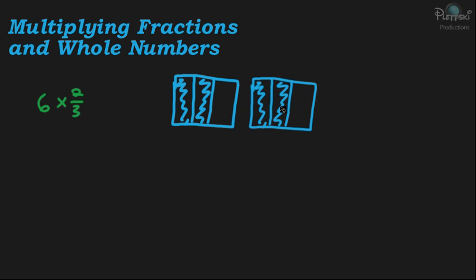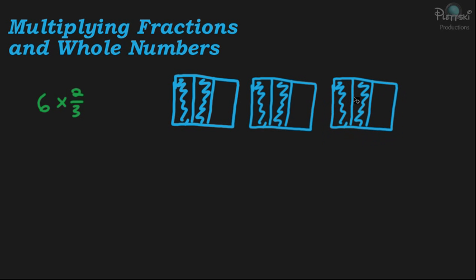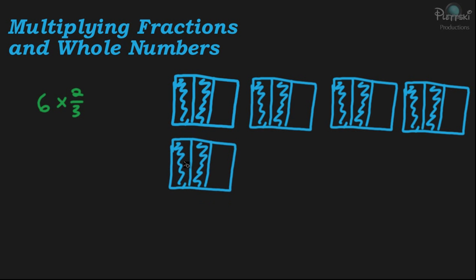So we have — there's two of them, there's three of them, there's four, there's five, and there's six of them. So we have six of those. We've multiplied two-thirds times six.